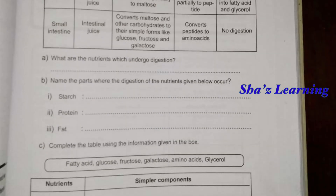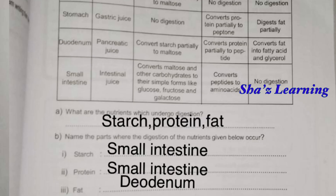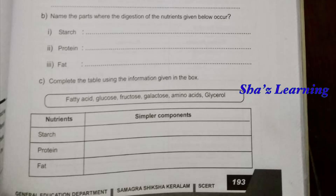Next, name the parts where the digestion of the nutrients given below occurs. Starch is completely digested in the small intestine. Protein is in the small intestine. Fat is in the duodenum. Next, nutrients and their simpler components: starch breaks into glucose, galactose, fructose; protein into amino acids; fat into fatty acids and glycerol.